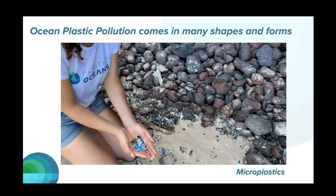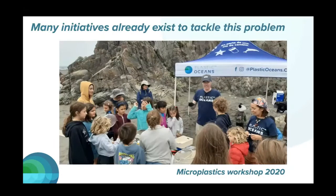You have macro plastic — big pieces — but you also have micro plastic, as shown here with my colleague Vivi, showing tiny fragments that happen after plastic floats around the ocean for many years and fragments into little pieces, ending up on shores or on the bottom of the ocean. Many initiatives already exist to tackle this problem — here you see us doing a microplastics workshop, teaching children how to recognize and filter microplastics from beaches and oceans.